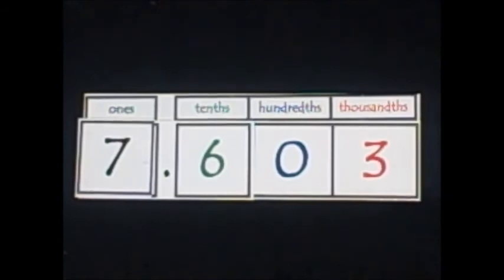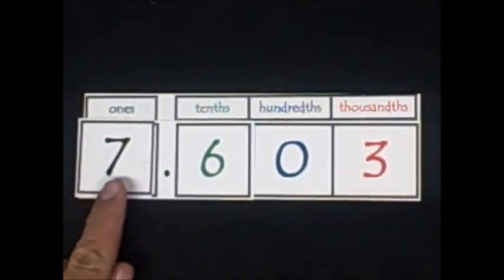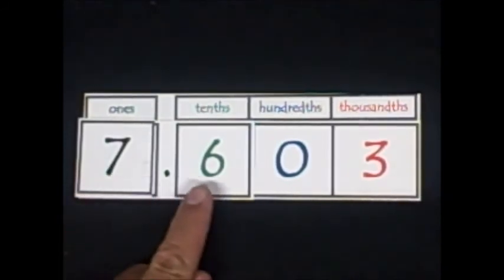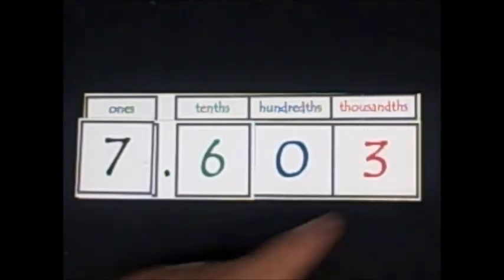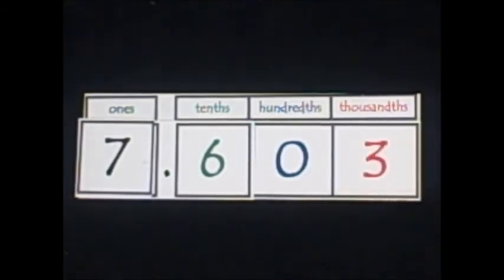Now we are going to skip a step. I have already made the number for you. The number is 7 and 603 thousandths.